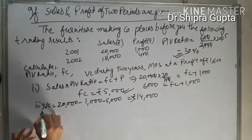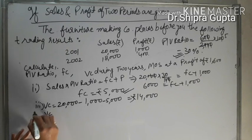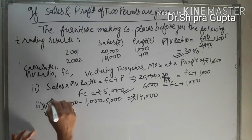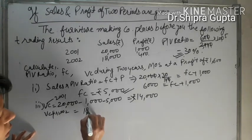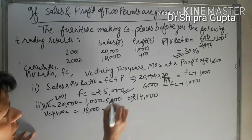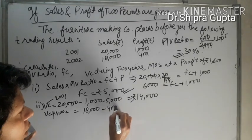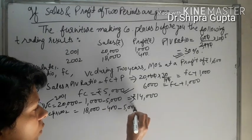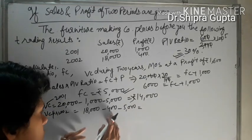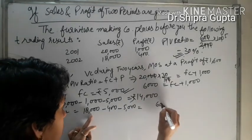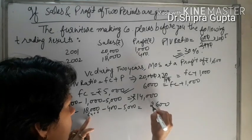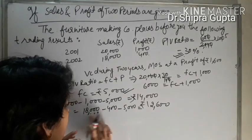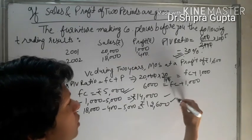For first year and for second year, you will get variable cost. Variable cost for 2001 and variable cost for 2002: 18,000 minus 400 minus 5,000, which means deduct 5,400, giving rupees 12,600. So these two answers are complete.